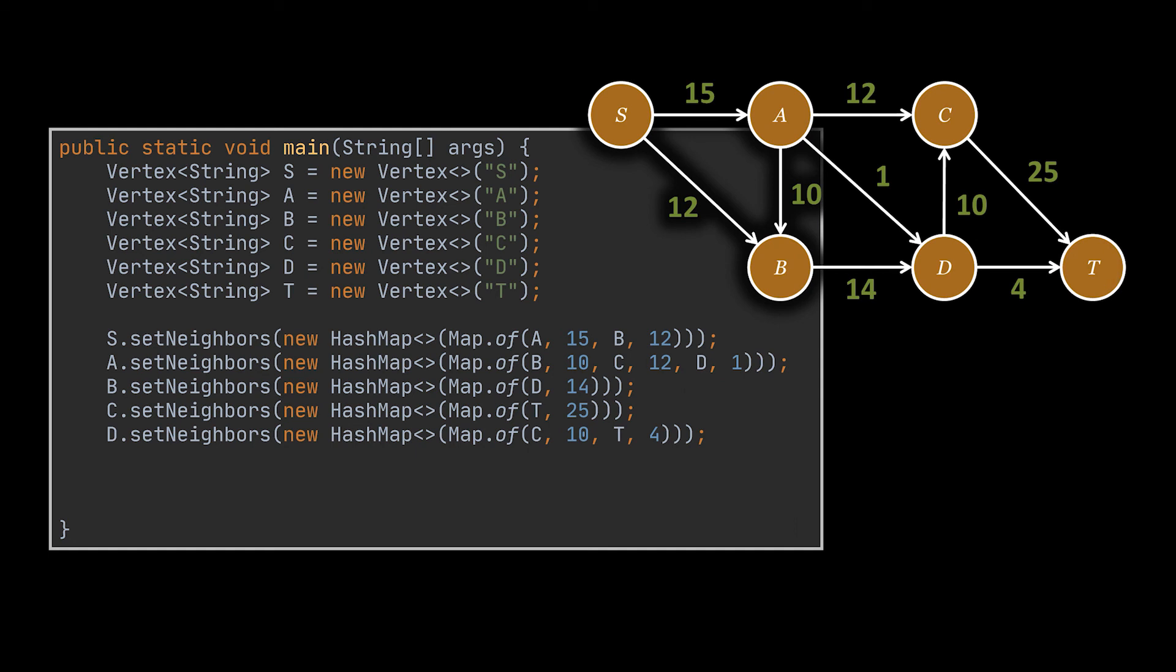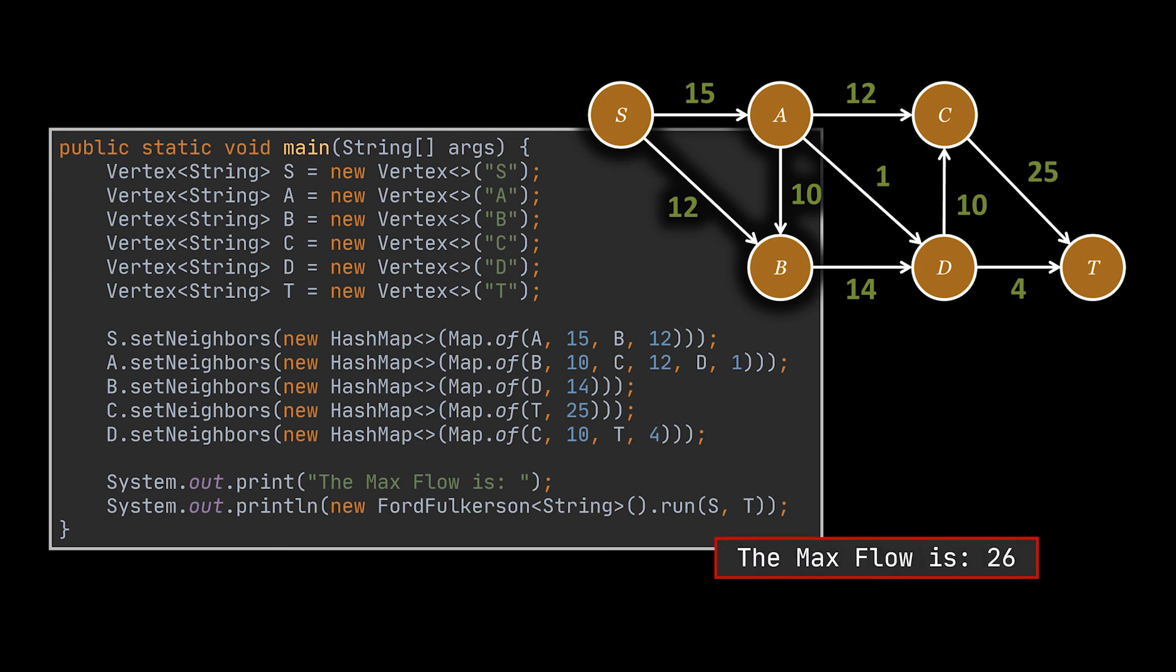Let's go ahead now and test our code. To do so I created several vertices and gave a weight to the edge separating them. The results should be similar to the graph we were working with at the beginning of the video. Then I called the run method of the class we just implemented, providing it with the source and the destination nodes, in this case S and T. And as you can see the result is the expected max flow from S to T, the same exact one we deduced together.